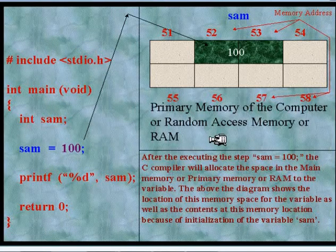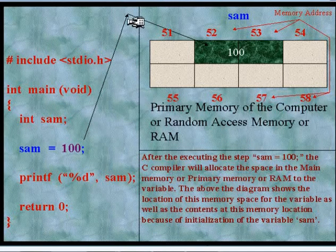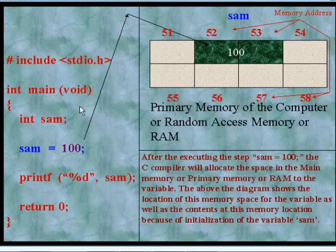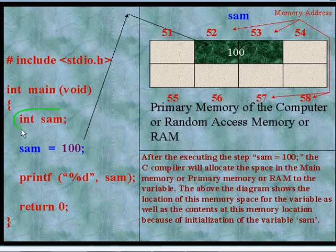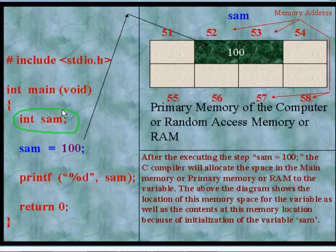Let us see the inner working of the second program. See this line: int sam; This is not an executable statement. It is only a directive to the compiler that sam is an integer type of variable. That is, sam will consume two bytes of memory. Remember that this statement won't allocate any memory.